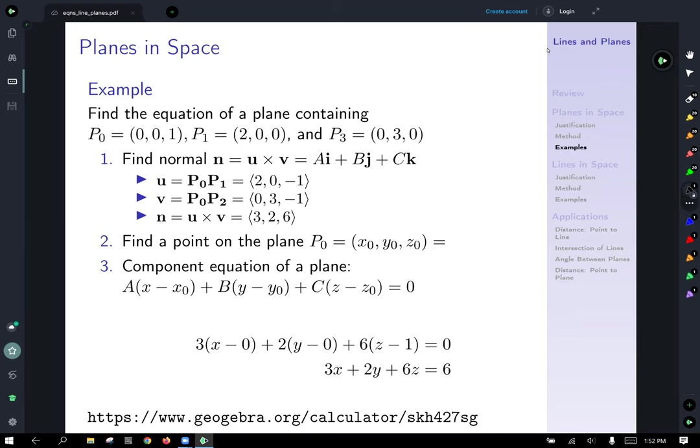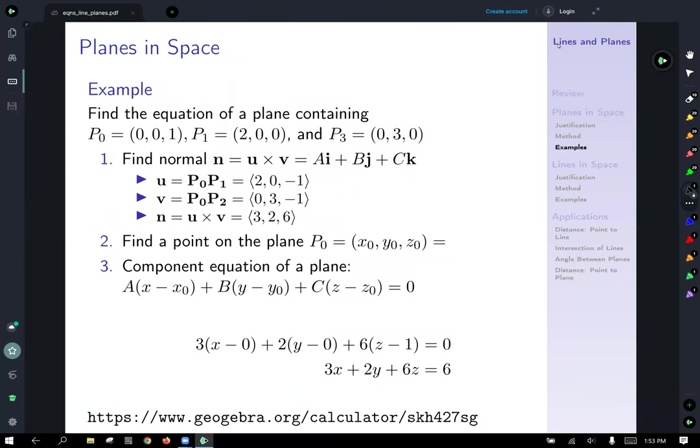Now we need to find a point on the plane. Well, we're given three points on the plane, so we could pick any one of them. But I chose just to use p0, 0, 0, 1. And so now I'm going to substitute into the formula that we have. And again, reminder that our normal here is a comma b comma c. Substituting in for a, b, and c, you got 3, 2, and 6. Substituting in for our point coordinates, x0, y0, and z0, you got 0, 0, and positive 1, respectively. And then you can algebra that all into shape and get 3x plus 2y plus 6z is equal to 6.